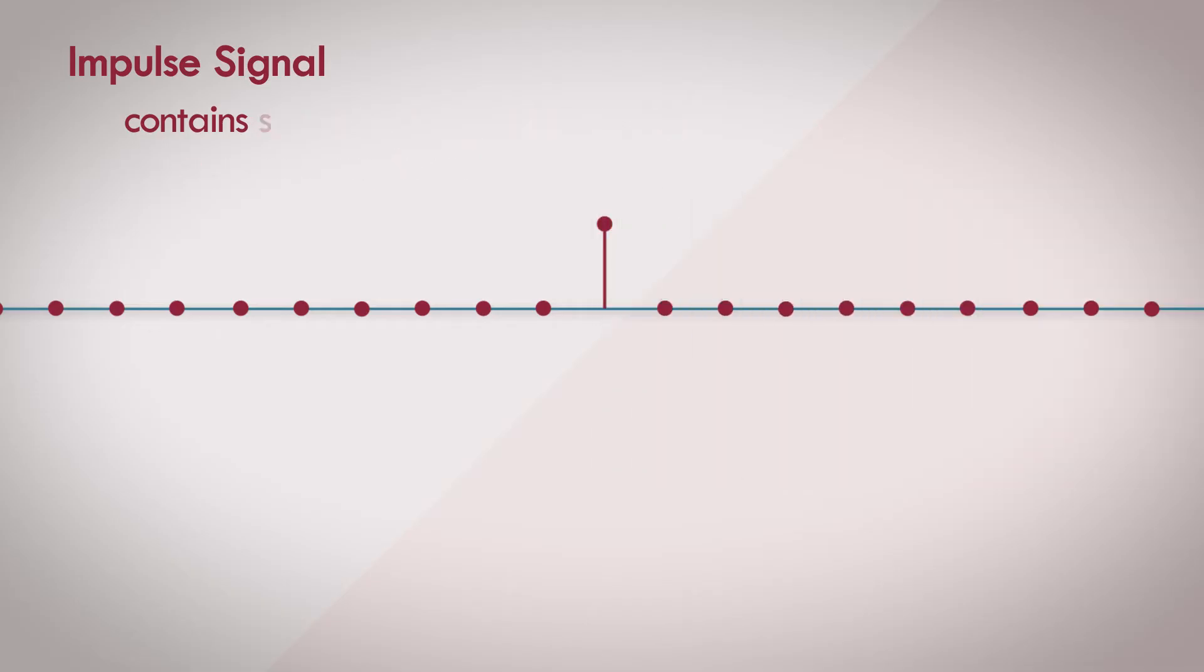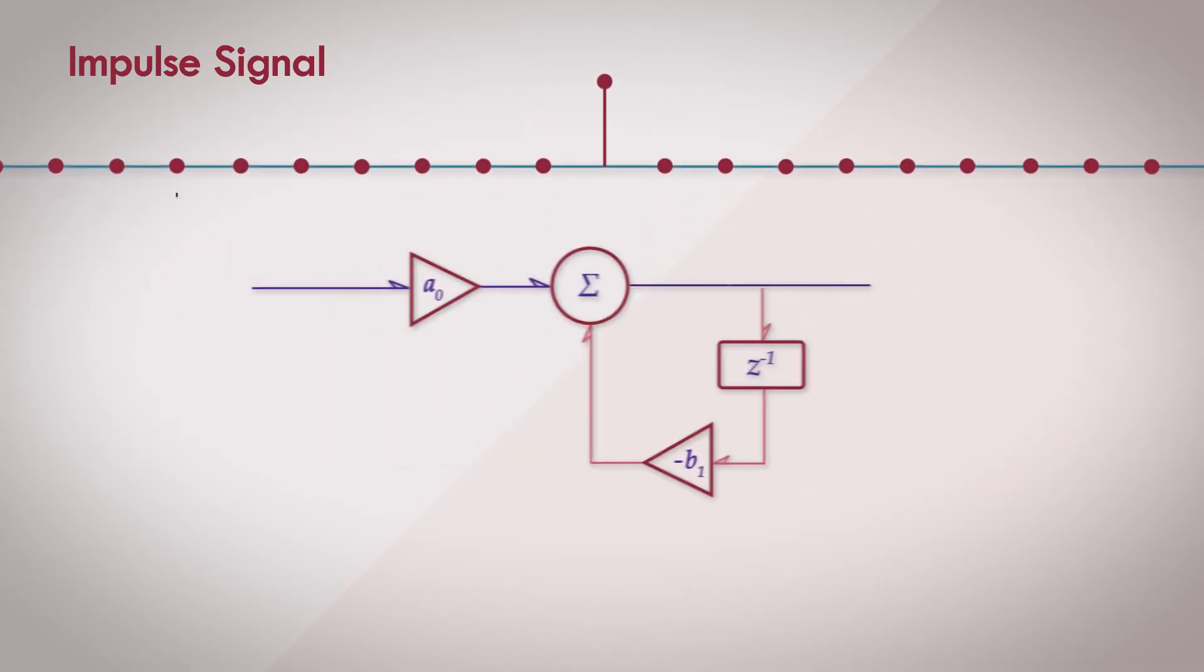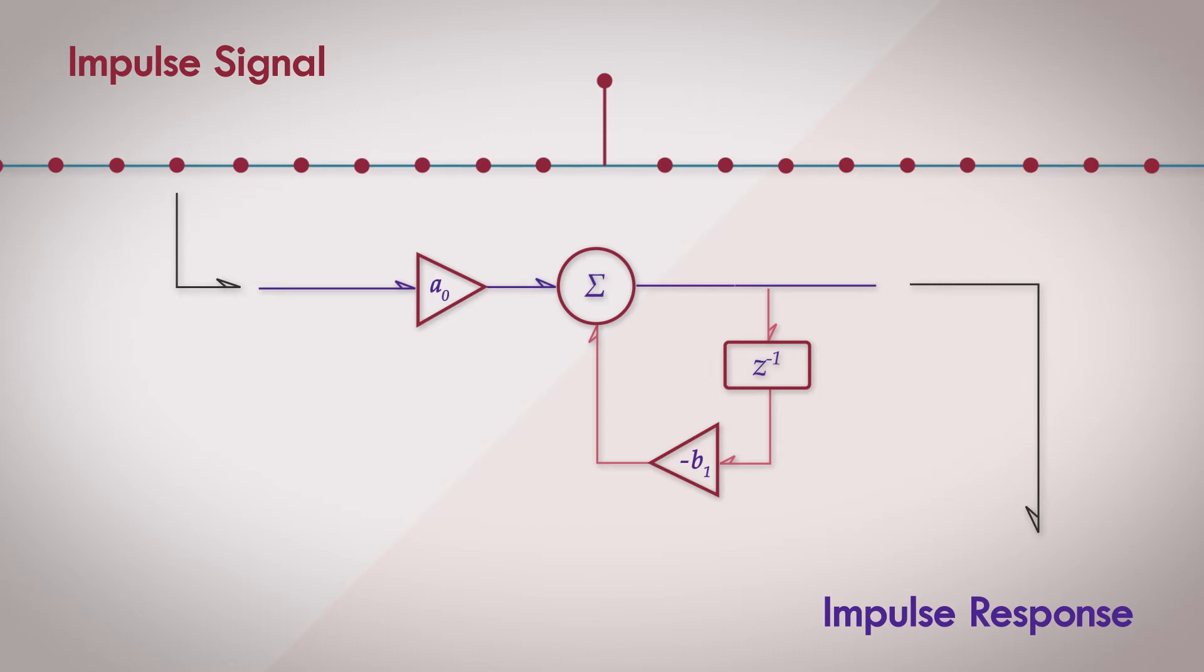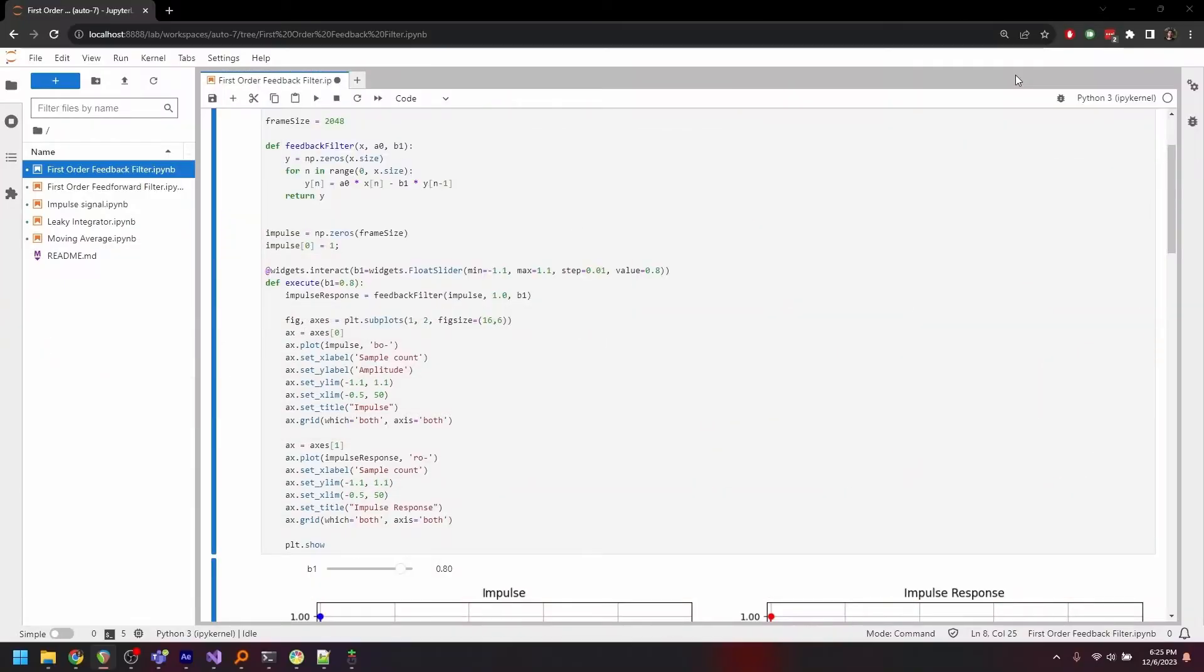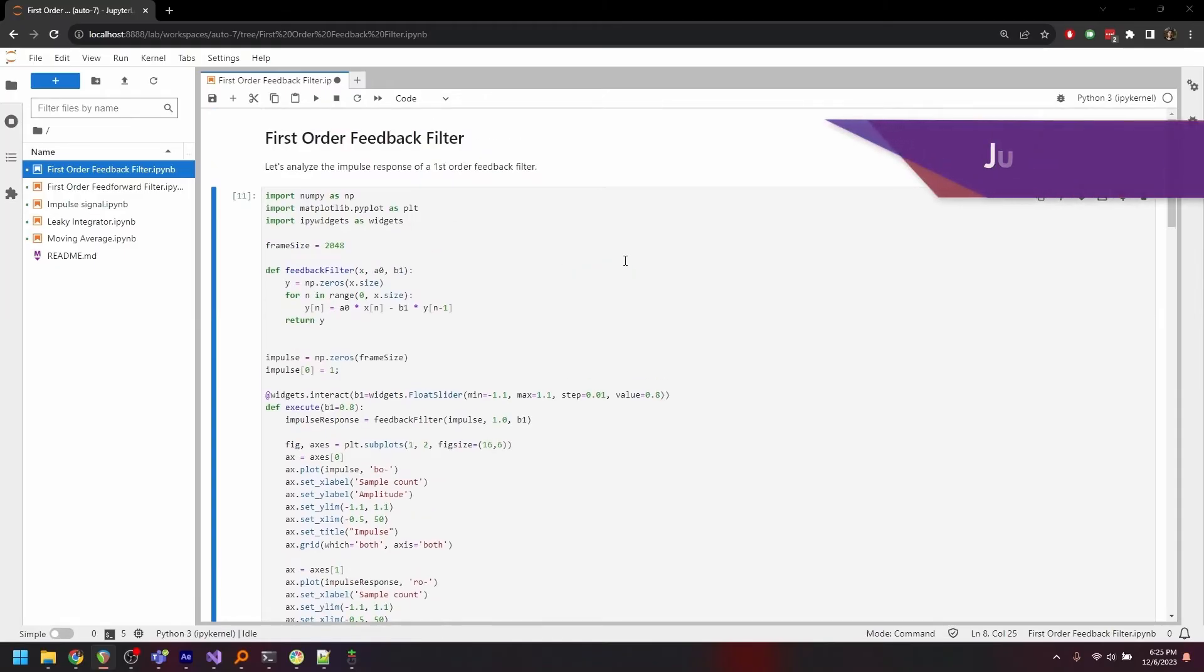So as before, we'll pass the impulse signal through the filter and observe the impulse response. We'll do this programmatically. We'll head over to JupyterLab, a Python environment where we can interactively run some snippets of code. I was using Jupyter Notebook before, but this is JupyterLab, apparently a more powerful evolution. I don't know, I'm not a Python guy. I mainly use it for these demonstrations.